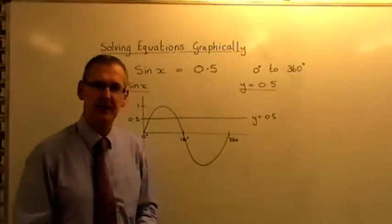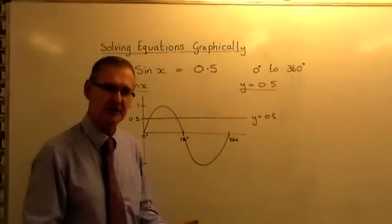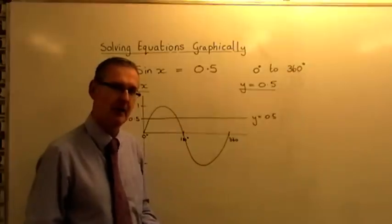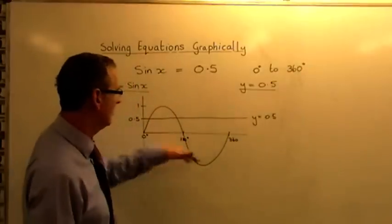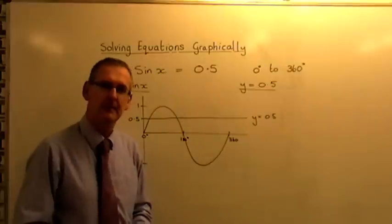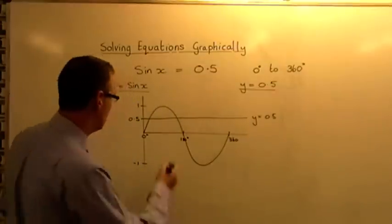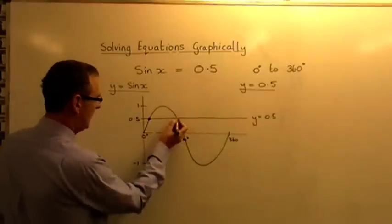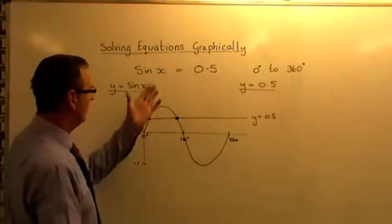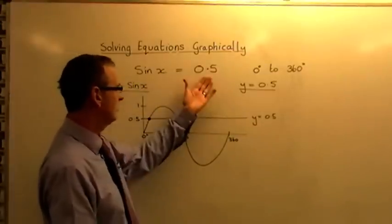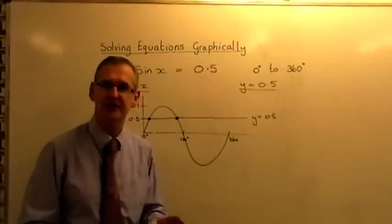Now, in this particular case, you will see, even though it's a sketch, you can still see what's going on, that the straight line I've drawn and the curve, the sine graph between 0 and 360, actually cross at two intersection points. There they are, 1 and 2. So actually, for sine x equals 0.5, there are two answers.